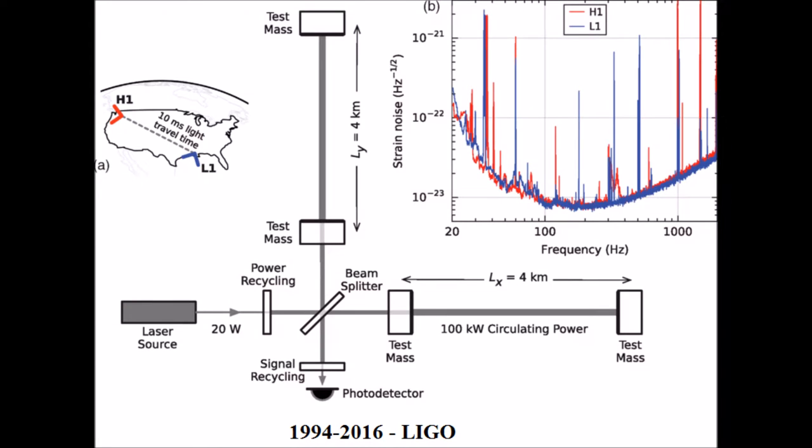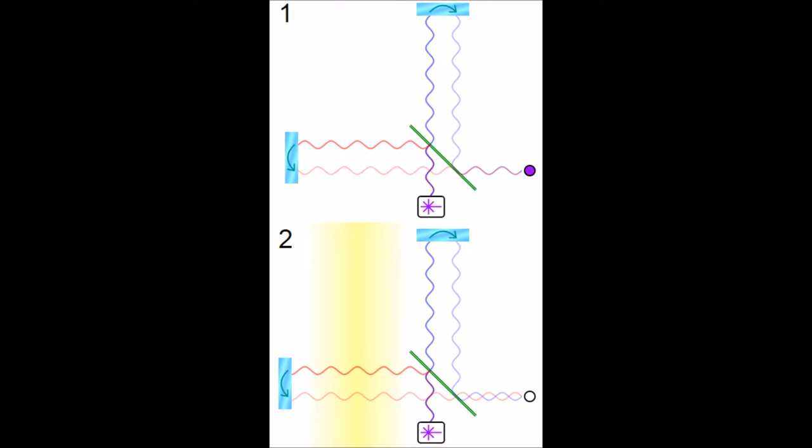Just last year, the Laser Interferometer Gravitational Wave Observatory used what is essentially the most sensitive Michelson interferometer ever made to detect gravitational waves from black holes merging over a billion light-years away from the Earth on two occasions.